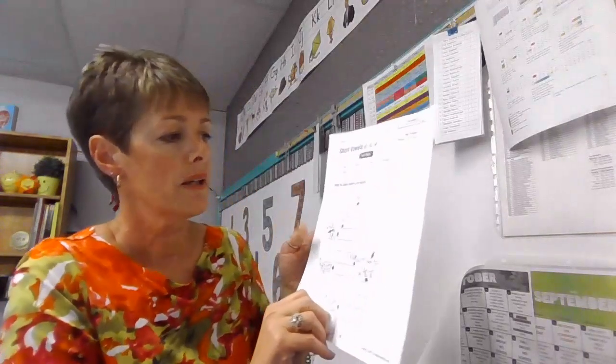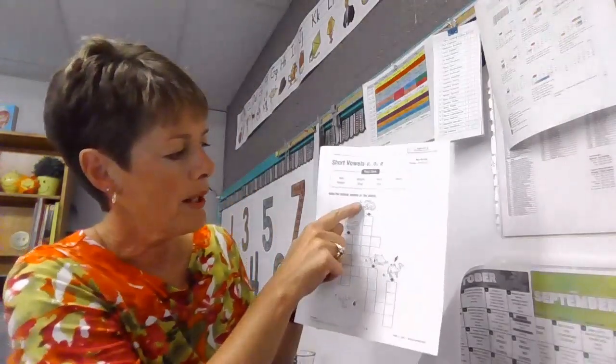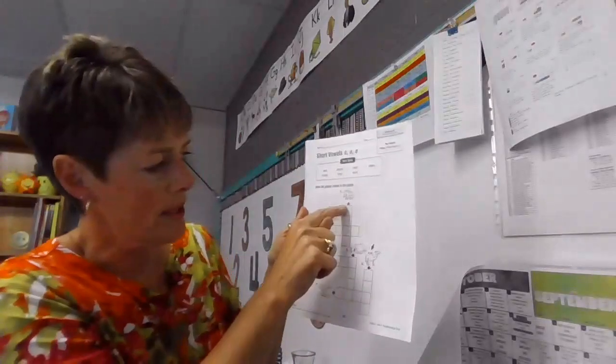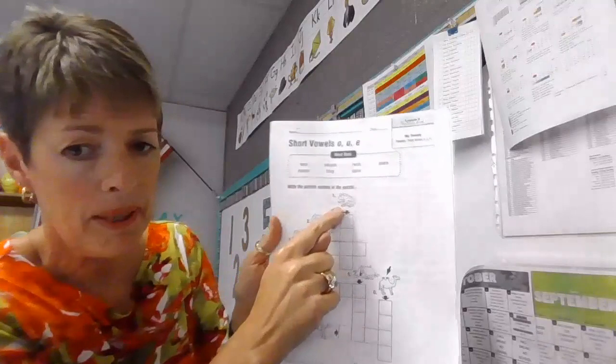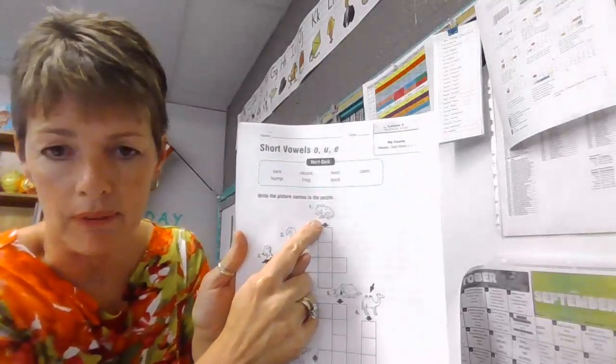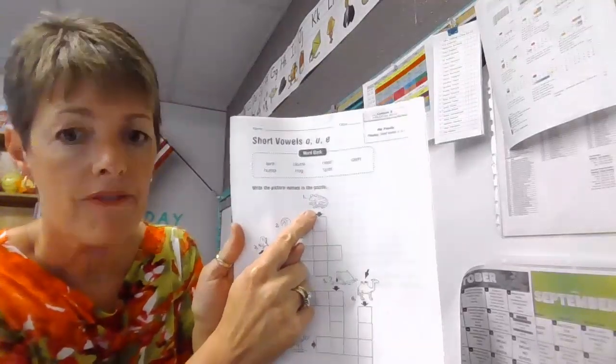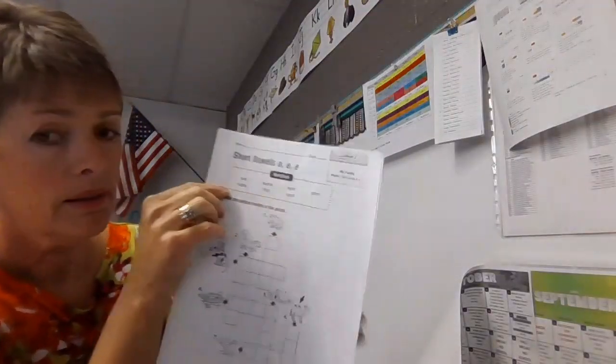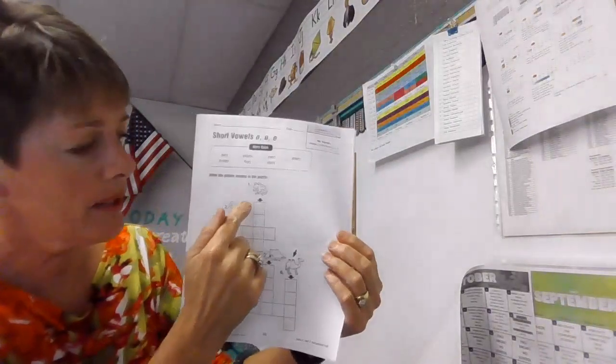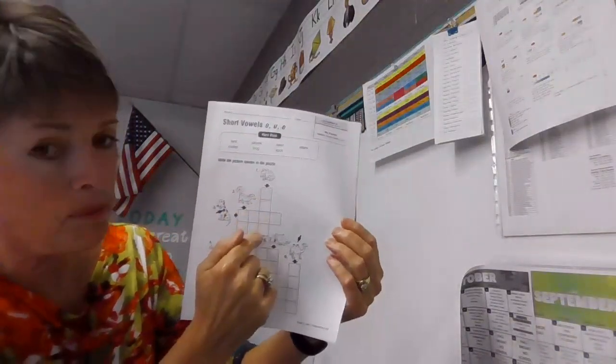All right. The rest of you, number one, going down. See the arrow? It points down. You have to look at that picture. What is that picture? Find that word up in the word bank, circle it, and then put the letters going down in the boxes.